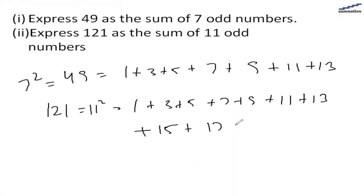Then 15 plus 17 plus 19 plus 21. These are basically 11 odd numbers, and this is how we can represent 11 squared.